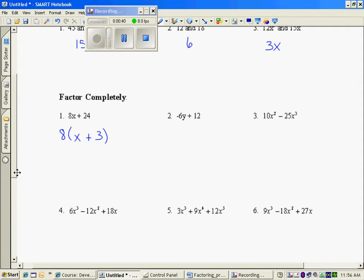Between -6 and 12 looks to be like -6. We always like to take negatives out if we can. That would be y minus 2.